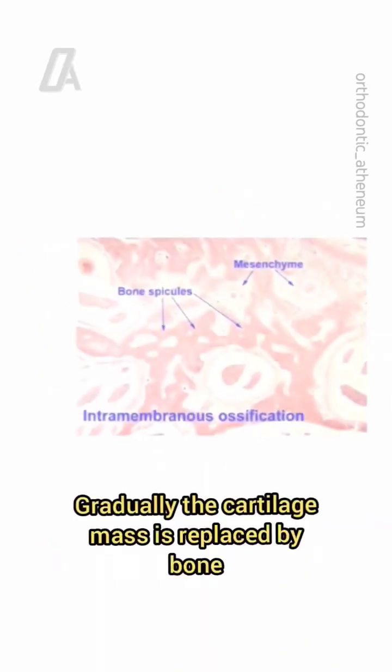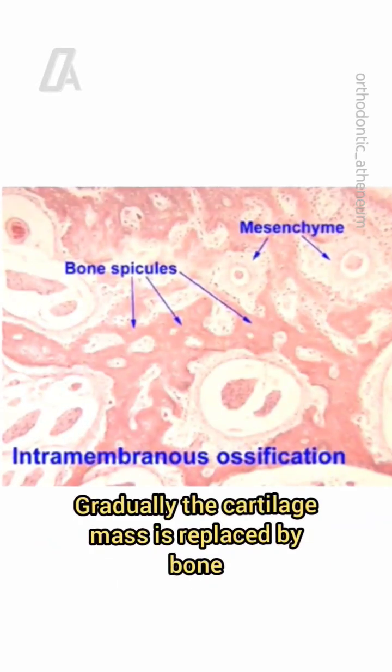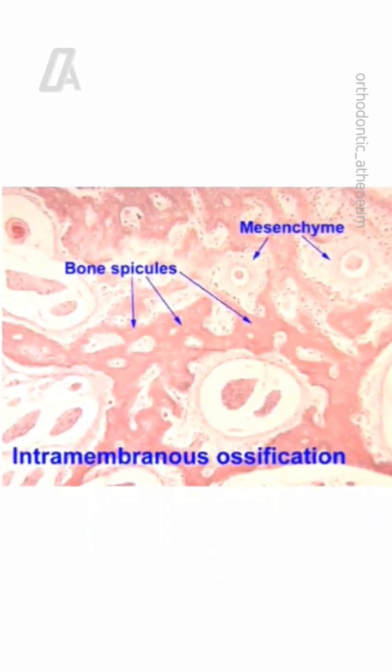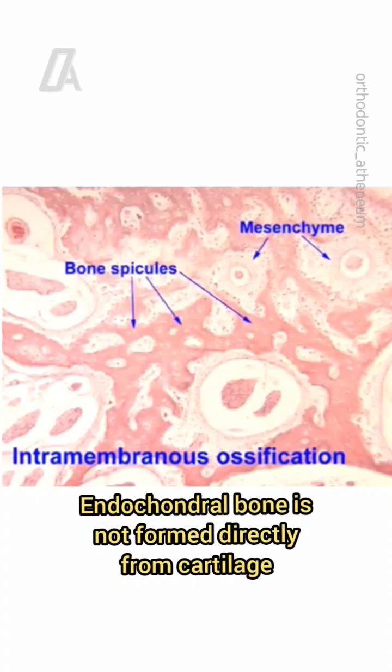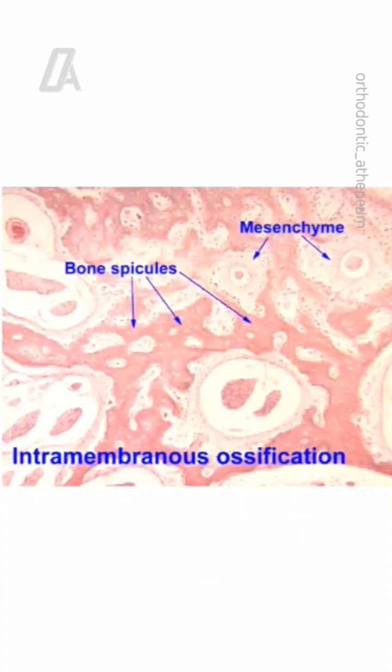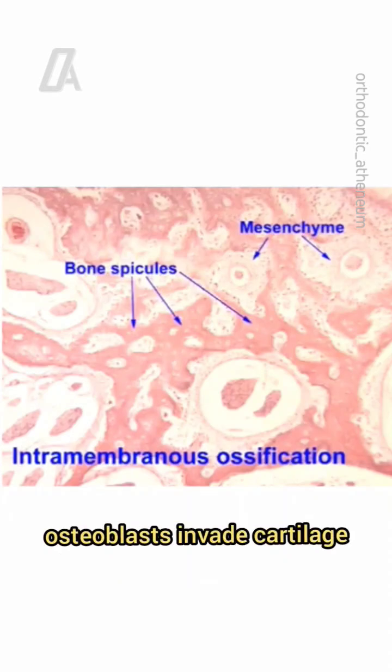Gradually the cartilage mass is replaced by bone. Endochondral bone is not formed directly from cartilage — osteoblasts invade cartilage and replace it.